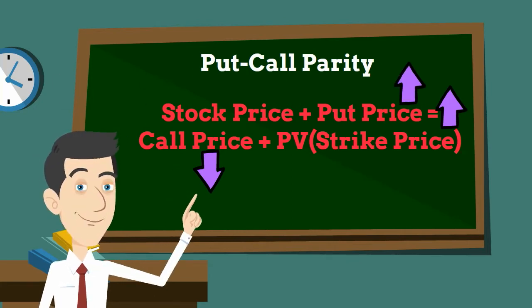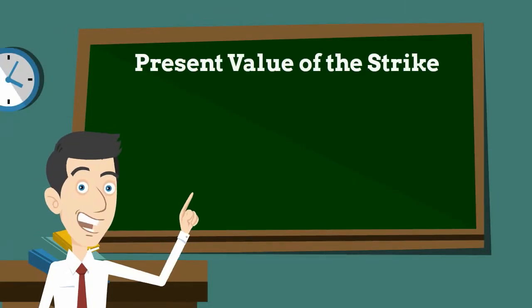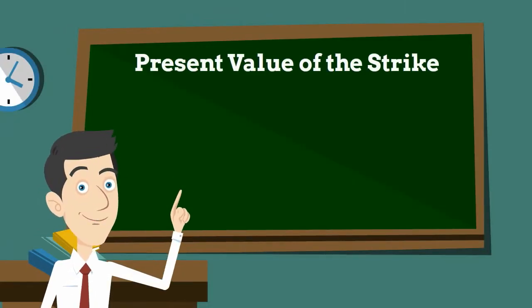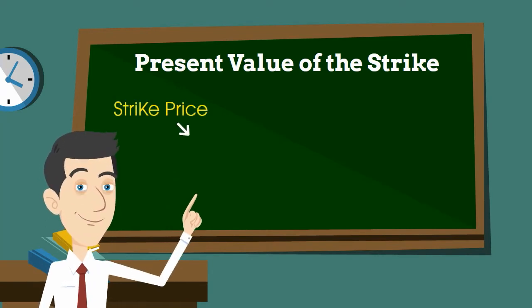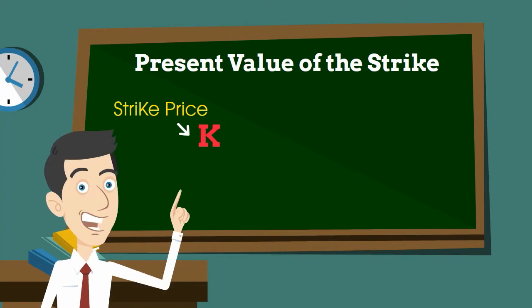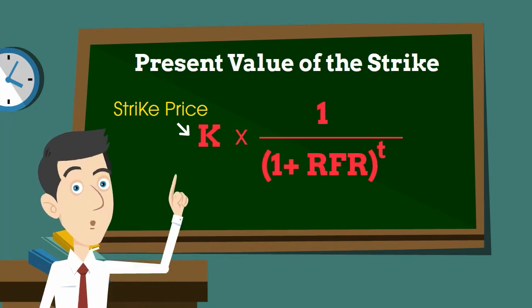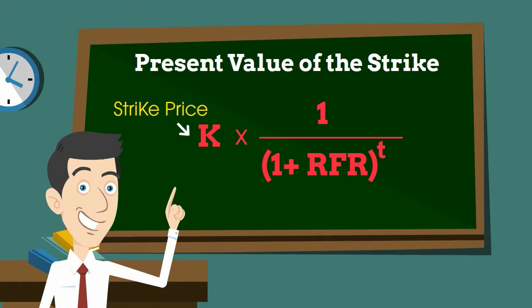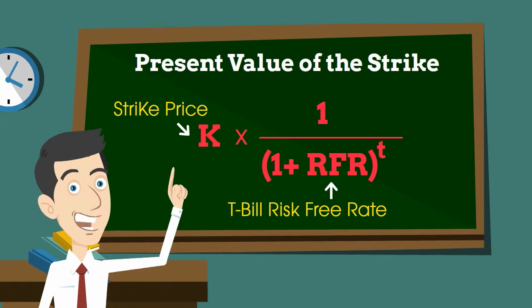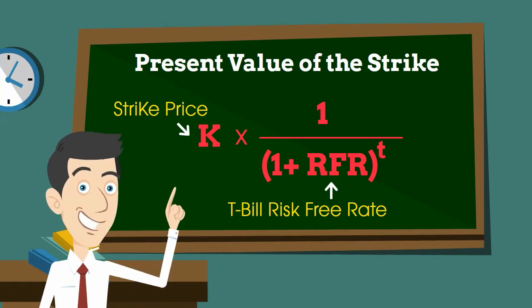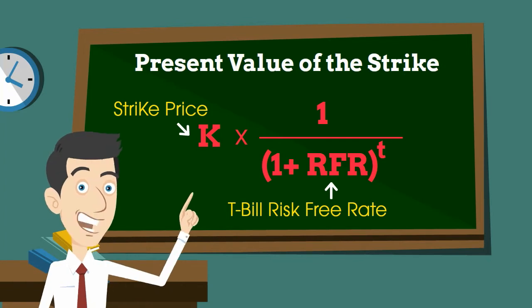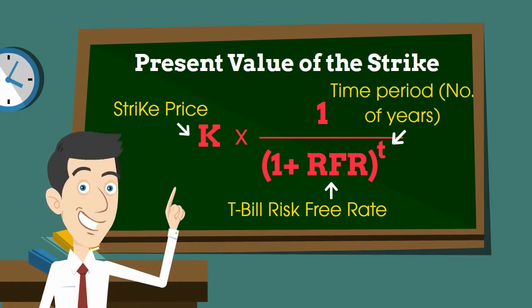So there is a balance between these two. In the formula, to calculate the present value of the strike price, you do K times 1 divided by (1 plus the rate of return) to the power t, where the rate of return is the risk-free rate used as the discount rate, and t is the time period in number of years.